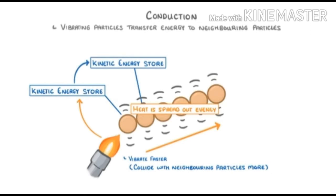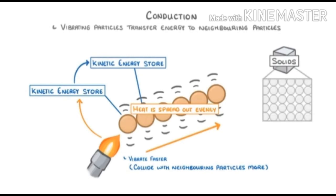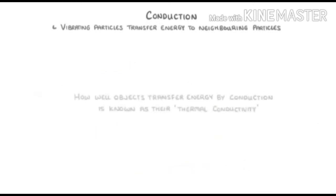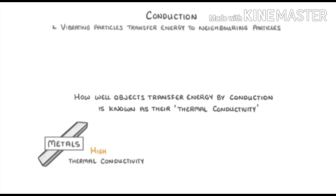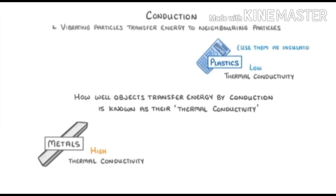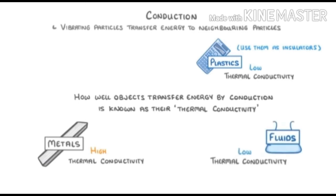The reason conduction occurs mainly in solids is because the particles in a solid are held together very closely, which means there are lots of collisions that pass on the energy. In liquids and gases the particles are further apart and so they don't collide as much. How well objects transfer energy by conduction is known as their thermal conductivity. Metals have high thermal conductivity and transfer heat rapidly, whereas plastics have low thermal conductivity, which is why we use them as insulators. Pretty much all fluids also have low thermal conductivity.